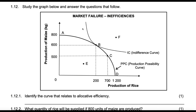It's impossible. But something can be done to shift the PPC outwards. By employing more factors of production, or even government intervention can shift out the PPC.